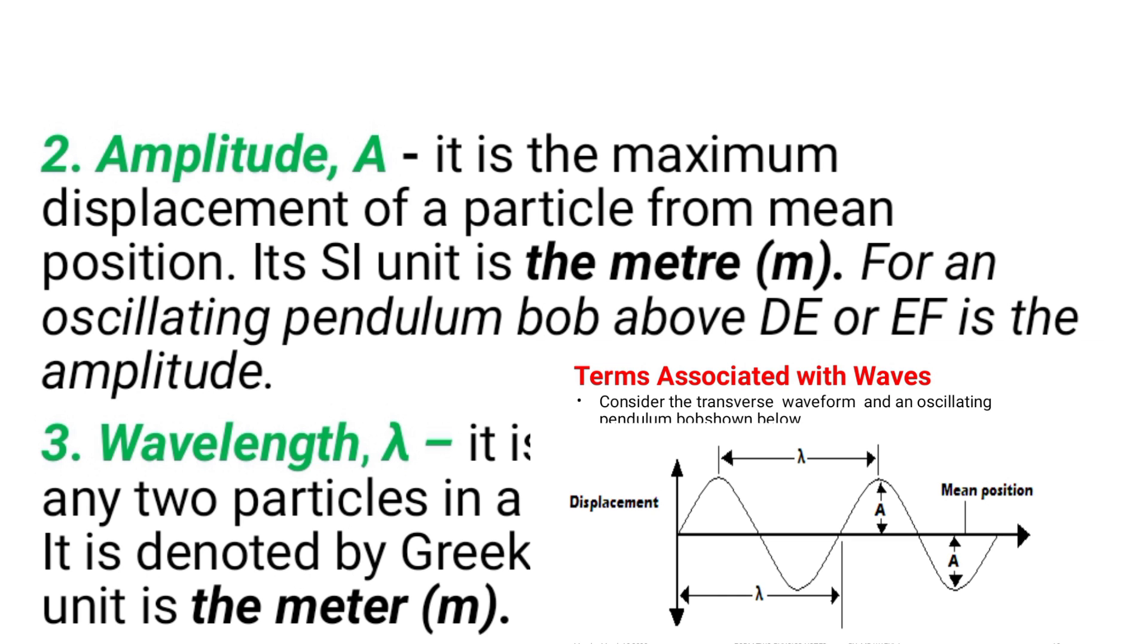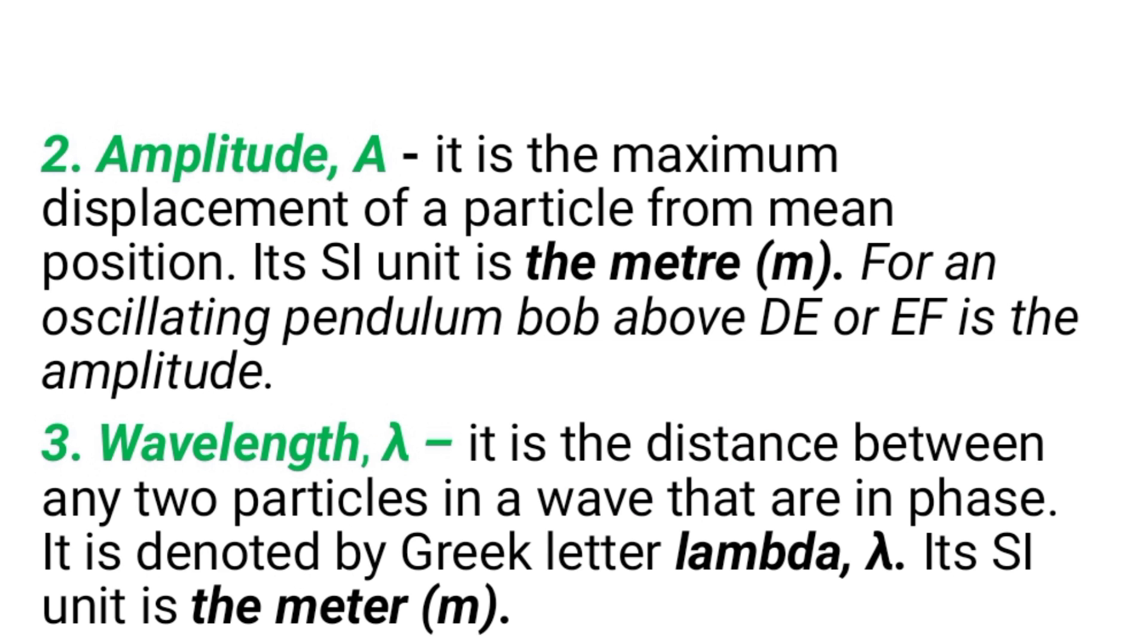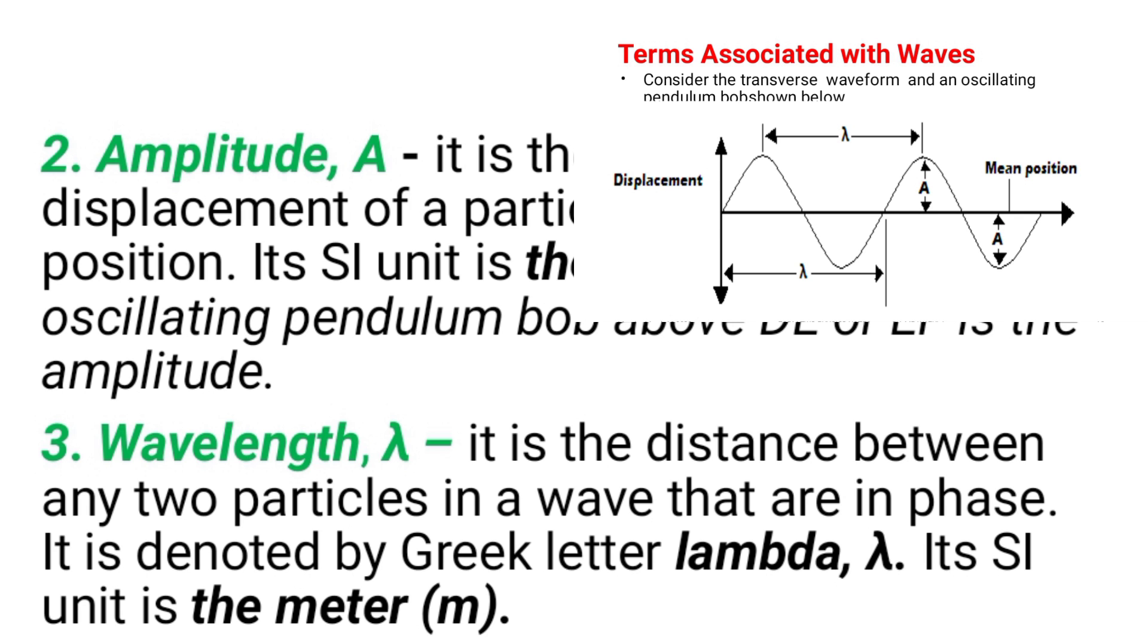When we talk about the amplitude is the maximum displacement of our particle from the mean position, like in my diagram there, the one abbreviated as A, that is the amplitude of a wave. When we talk about a wavelength, it's a distance between two successive crests or troughs. We can see there, it's abbreviated by lambda, the Greek word, and it is measured in meters.